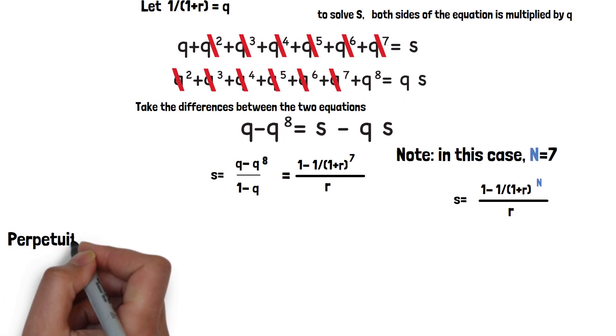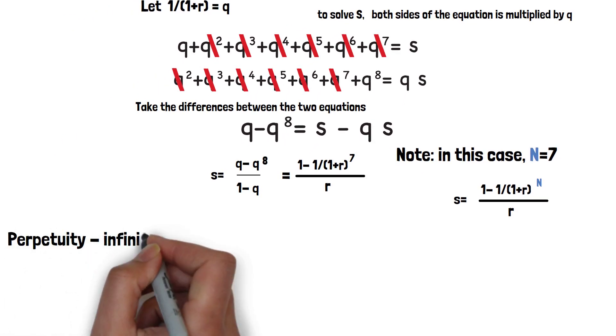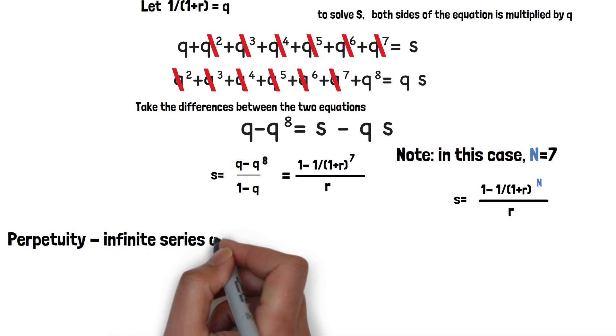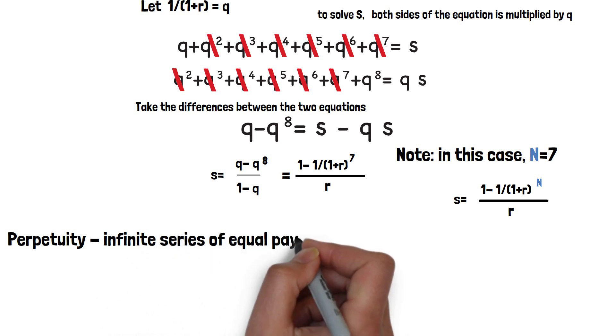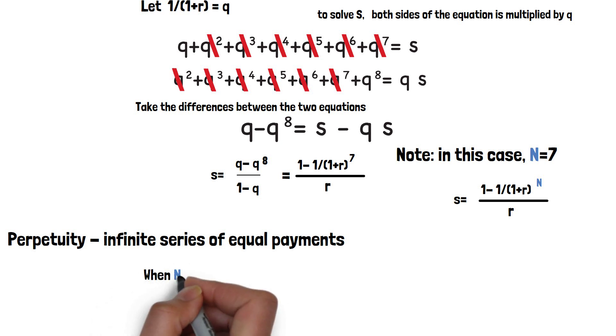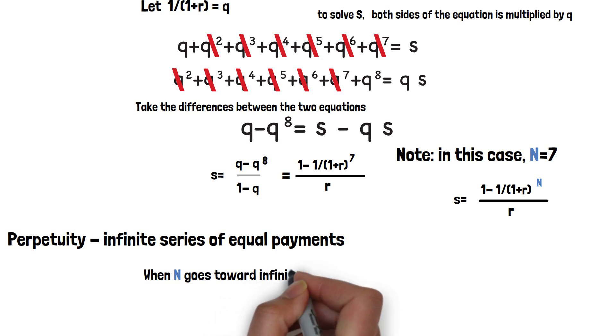Okay, so perpetuity, that's the infinite series of equal payments. So that means the n goes to infinity. So take a look at the generic form equation we just derived.